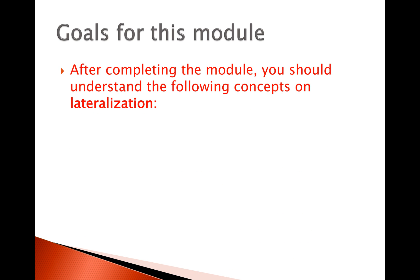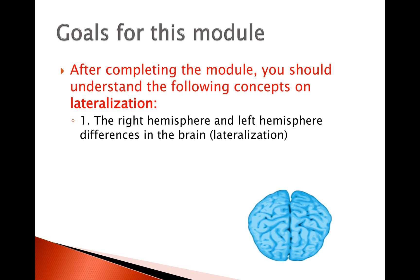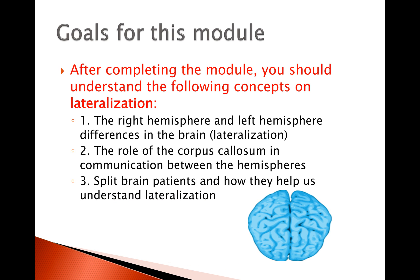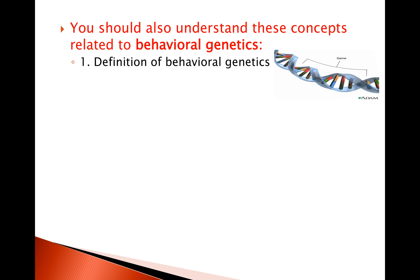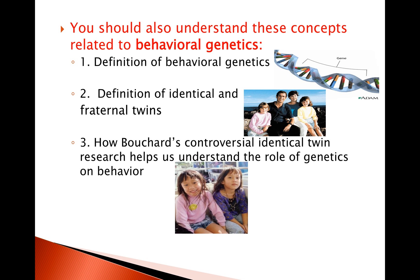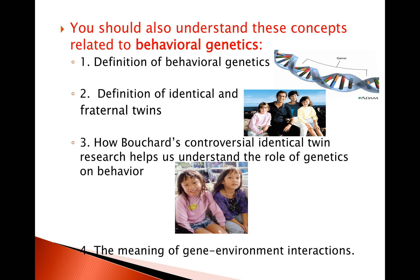Your goals for this module should include the following concepts. You should understand lateralization — that is, the right and left hemisphere differences in the brain. You should understand the role of the corpus callosum in communication between the hemispheres, and understand the relevance of split brain patients in helping us understand lateralization. You should also understand behavioral genetics: its definition, the definition of identical and fraternal twins, Bouchard's controversial study on identical twins, and an appreciation of gene and environment interactions in determining behavior.